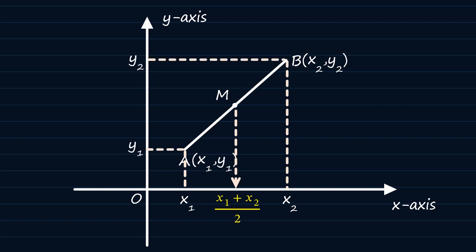The y-coordinate of M should also lie halfway between y1 and y2, which can be written as y1 plus y2 all over 2.